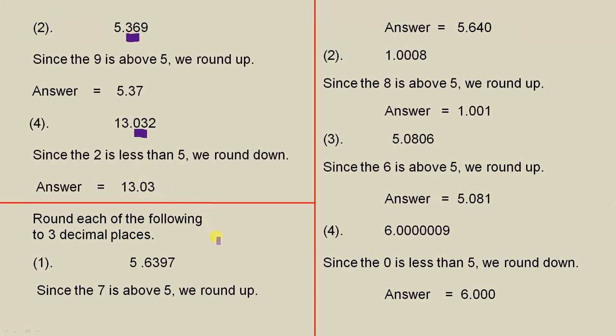Now let's look at a few where we round each of the following to three decimal places. So for the first one, we definitely have to have three digits after the decimal point.